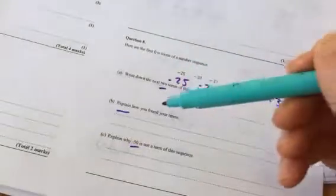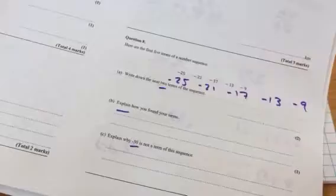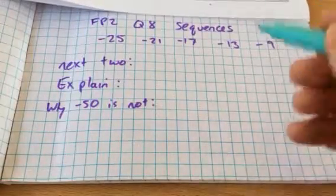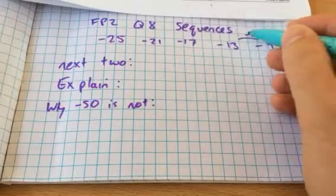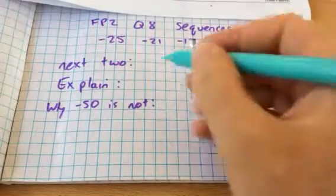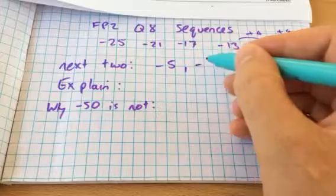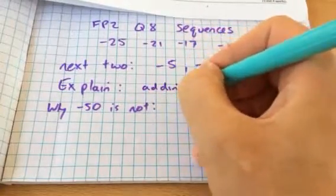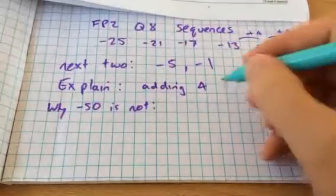Write down the next two terms of the sequence, explain how you found your terms, and explain why minus 50 is not a term in this sequence. So the next two, well I can see we're adding 4, so I'm going to add 4 and get minus 5 and minus 1. How to explain it, I would just say adding 4 each time.